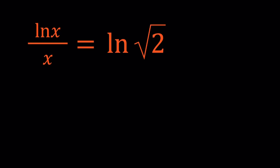Hello everyone. In this video we're going to be solving a logarithmic equation with natural logarithm or ln. That's what ln stands for and the base is E in this case, which is Euler's number. So we have ln x over x equals ln square root of 2 and we're going to be solving for x values.